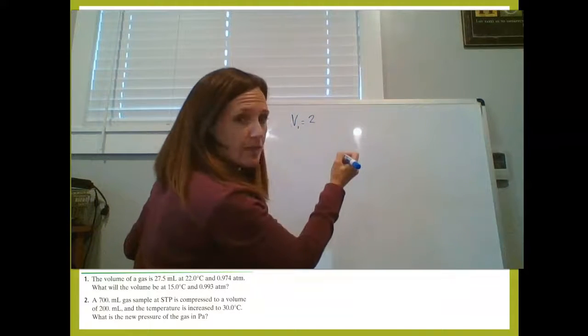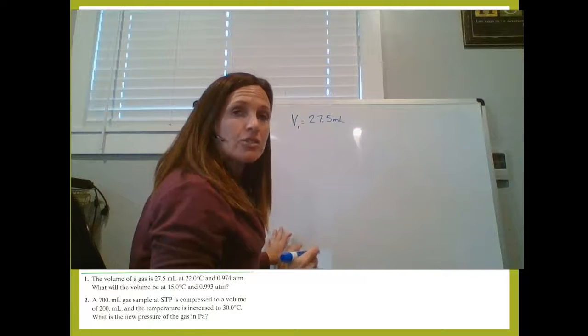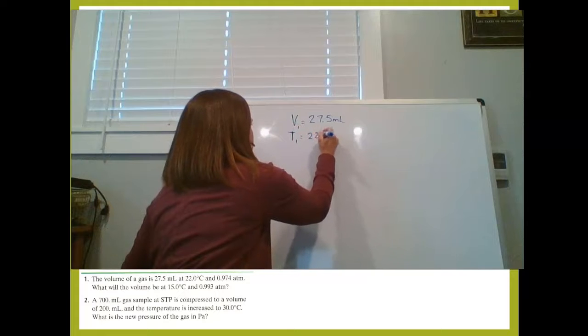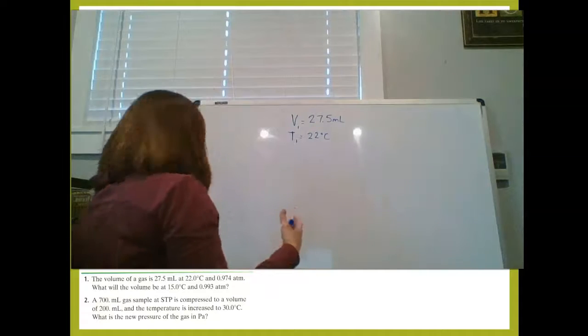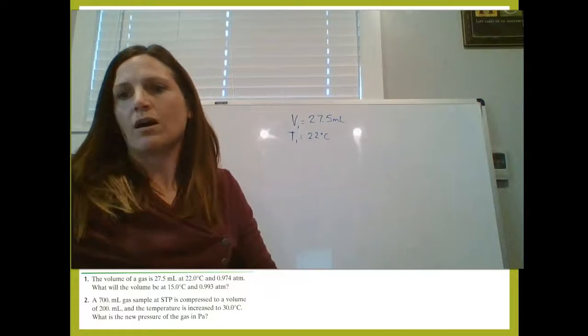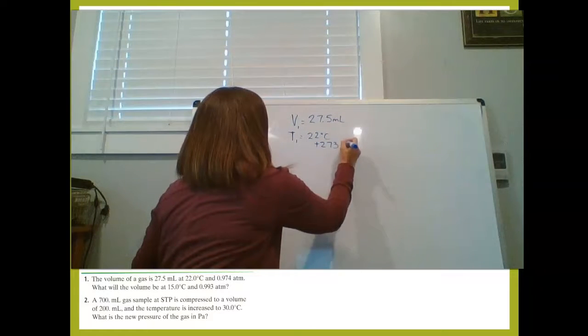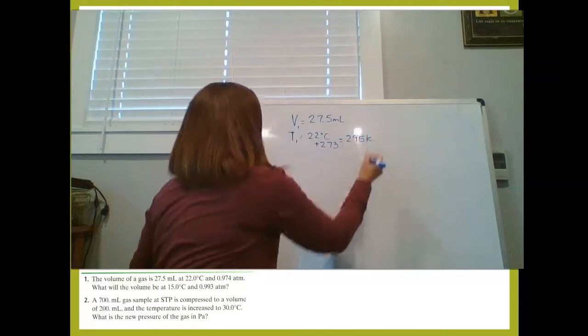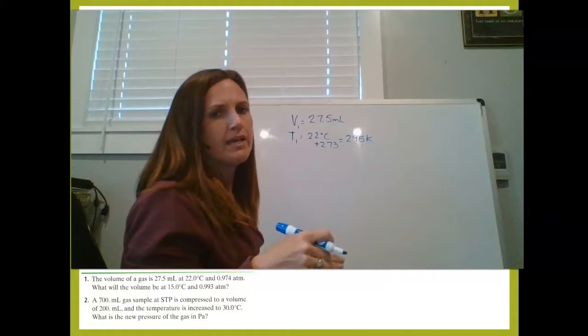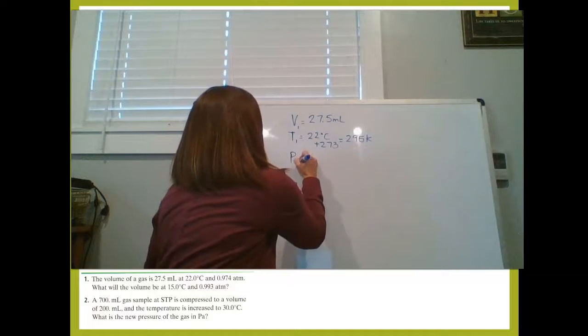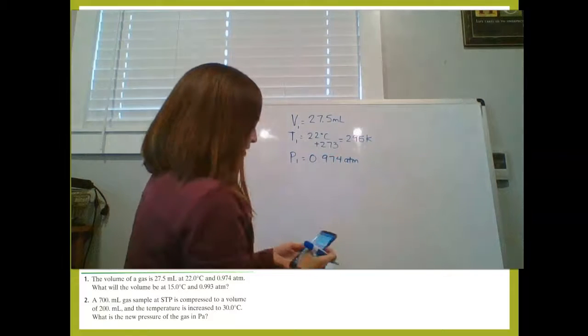At 22 degrees Celsius, T1, 22 degrees Celsius. Remember when we're in degrees Celsius, we immediately add 273 to get us to our temperature. So we're going to add plus 273, which is 295 Kelvin. And then our pressure one is 0.974 ATM. So P1 equals 0.974 ATM.